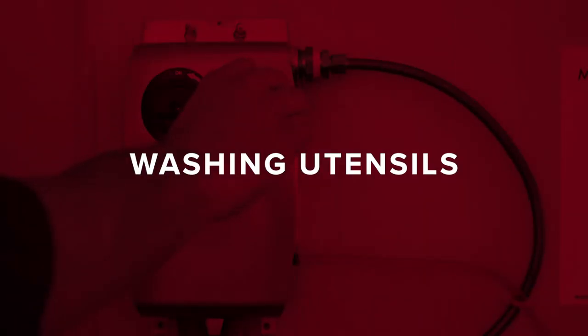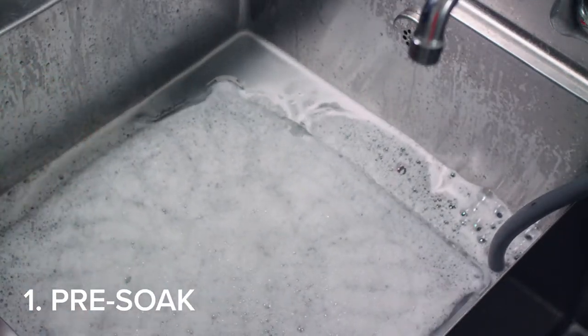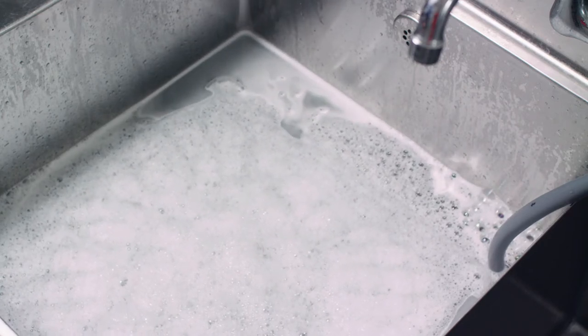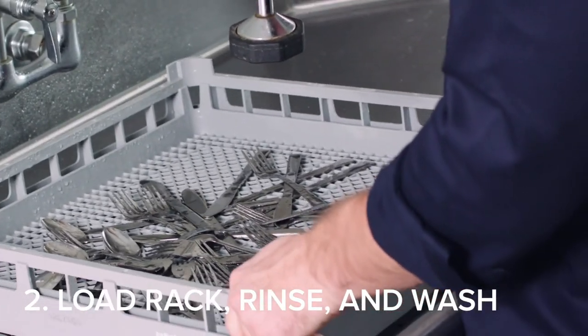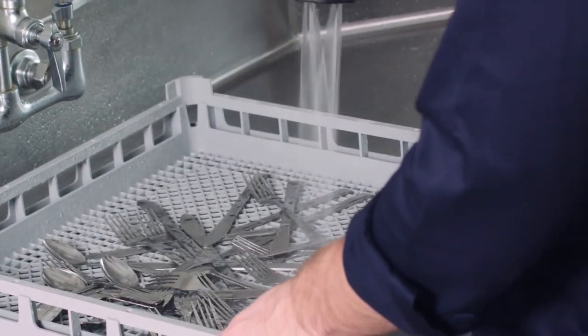Washing utensils. Start by filling a sink with hot water and pre-soak solution. Allow soiled utensils to soak for 15 to 30 minutes. Load the utensils into a flat rack. Rinse thoroughly to ensure no pre-soak solution enters the machine.